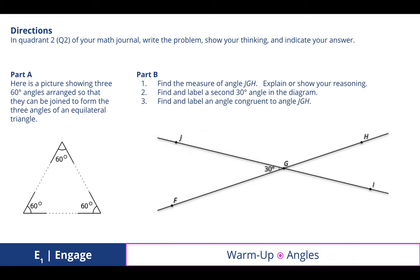In quadrant two of your math journal, let's write the problem, show your thinking, and indicate your answer. For part A, I just wanted to share with you a little activity in which you could take a triangle, really of any shape with any angles, cut those angles, and connect them in a straight line. And you'll notice that they always form a straight line of 180 degrees. This one's an easy one to understand because 60 times 3 would be 180.